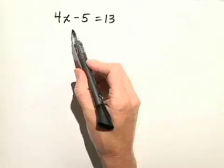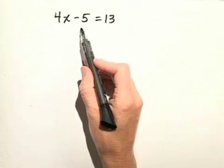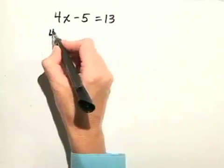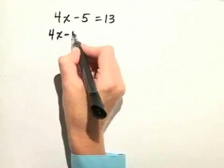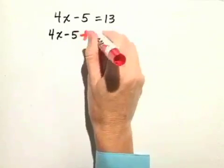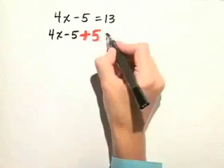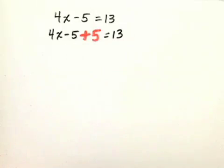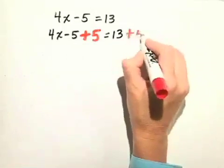First, we have 4x minus 5, so we can add 5 to both sides of this equation. 4x minus 5 plus 5 equals 13 plus 5.